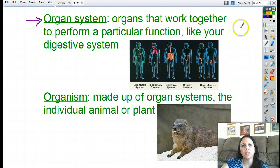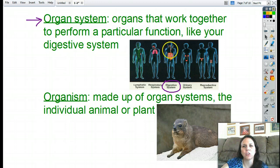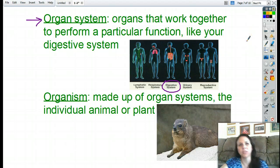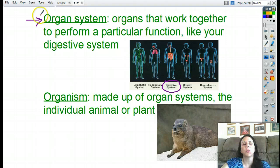So these are organs that work together to perform a particular function, like your digestive systems, which is right here. So notice it's made up of your mouth, your esophagus, your stomach, your small intestine, your large intestine, and even your liver as part of your digestive system, as well as other systems too. So an organ system is just like organs that all kind of work together to perform the same job.